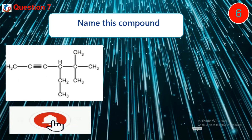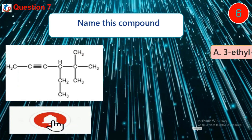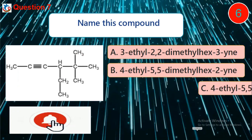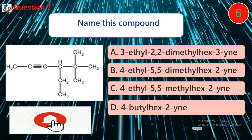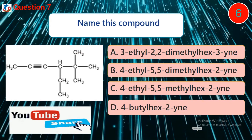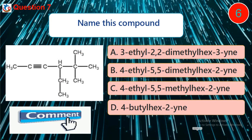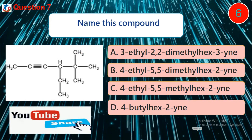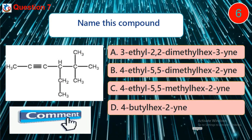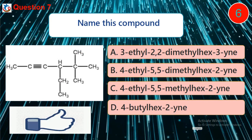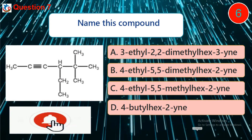Question 7. Name this compound. A. 3-ethyl-2,2-dimethyl-alkene. B. 4-ethyl-5,5-dimethyl-alkene. C. 4-ethyl-5-methyl-alkene. D. 4-butyl-alkene.